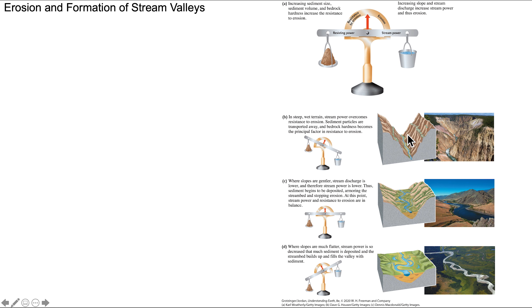Here in Yellowstone Park we have a steep gradient. There's a big waterfall just out of frame — the lower falls at 308 feet, and the upper falls further upstream at around 109 feet — precipitous drops. In between we have a fairly steep gradient visible as rapids. This rock is rhyolite, somewhat loosely consolidated and easily weathered, so resisting power is weak and stream power is strong.